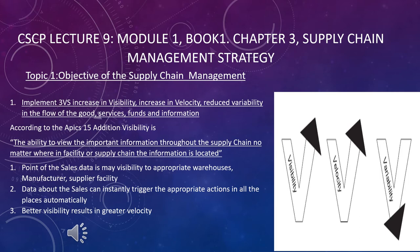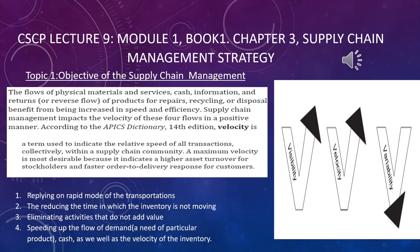Now let's discuss velocity. The flow of information, physical material, services, cash, and returns benefits from being increased in speed and efficiency. APICS defines velocity as a term used to indicate the relative speed of all transactions collectively within a supply chain community. Maximum velocity is desirable because it indicates high asset turnover for stakeholders and faster order-to-delivery response for customers.